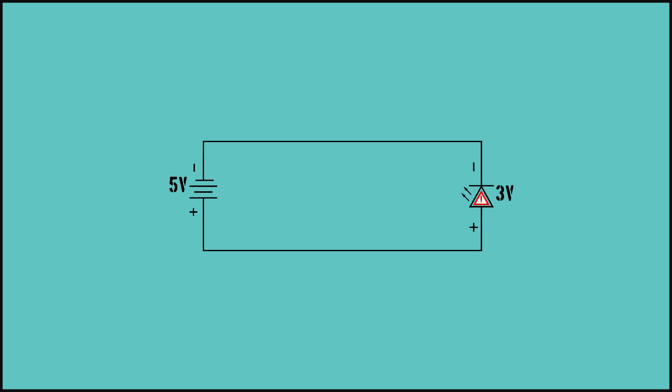For example, here, we see an LED connected to a battery without a resistor. The battery is 5 volts, but the LED requires 3 volts. In the case without the resistor, the LED is damaged from the overload. Add a resistor, wired in series, so the voltage drops to the required 3 volts, and the LED will function properly.